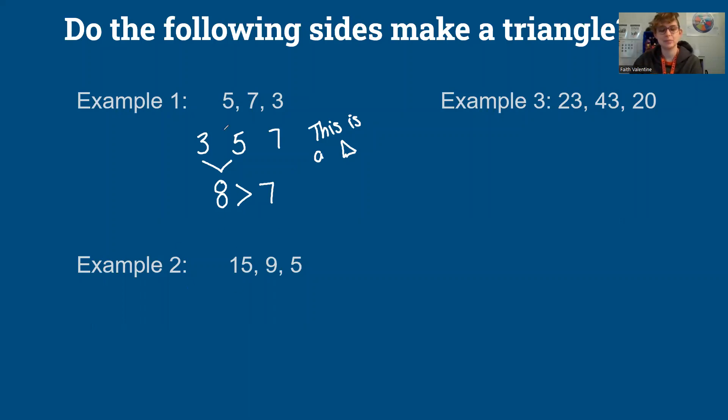Our next example. I'm going to put them in order. So five, nine, and fifteen. We're going to add the five and the nine and get 14. Is 14 greater than our longest side, 15? Well, that's not a true statement. So this is not a triangle.